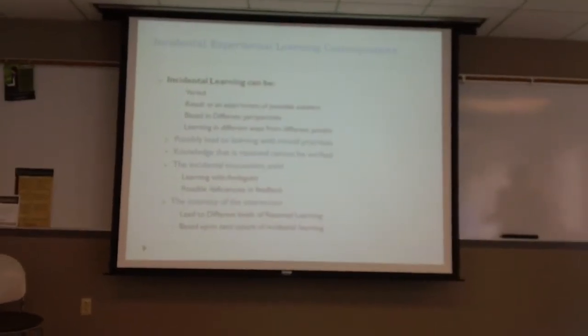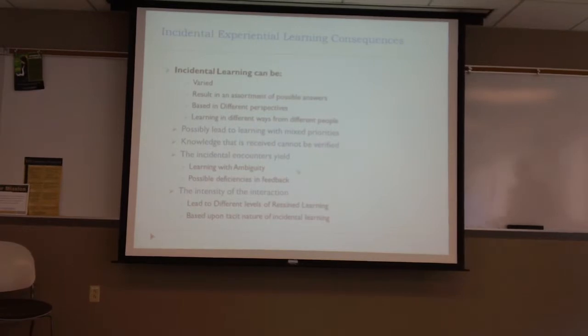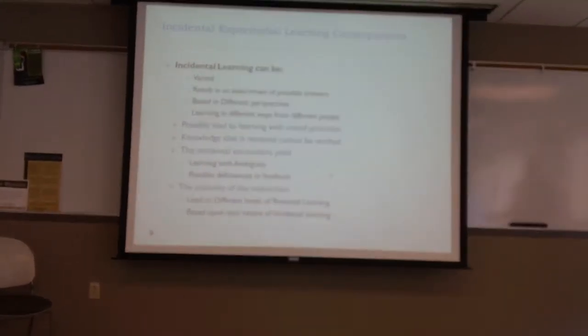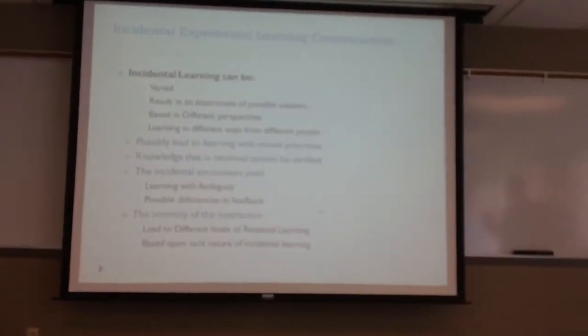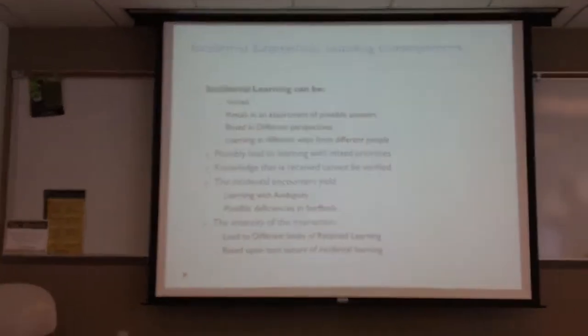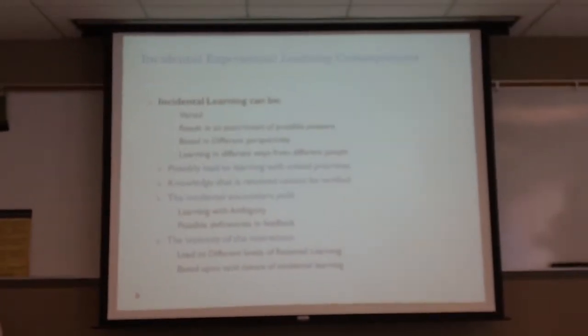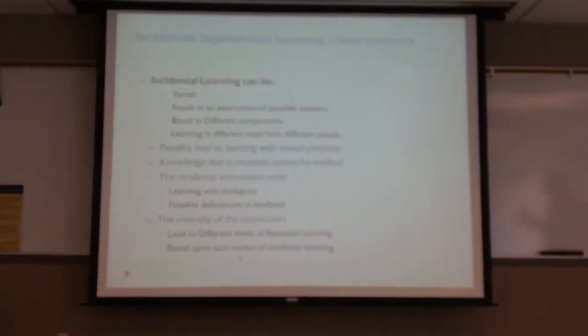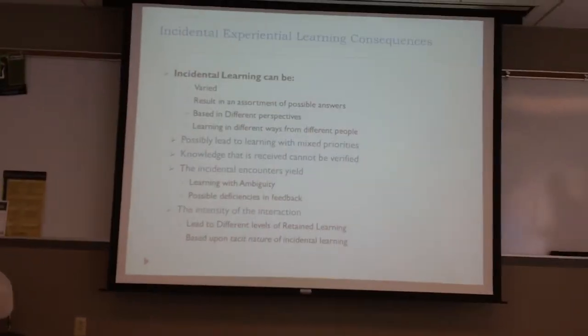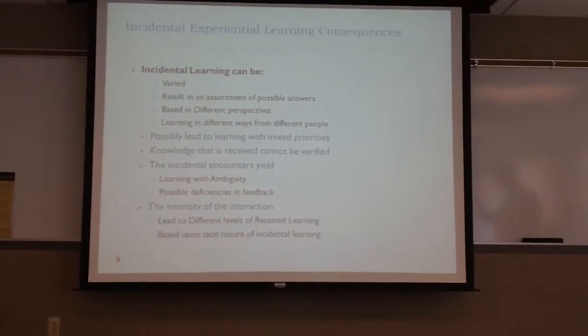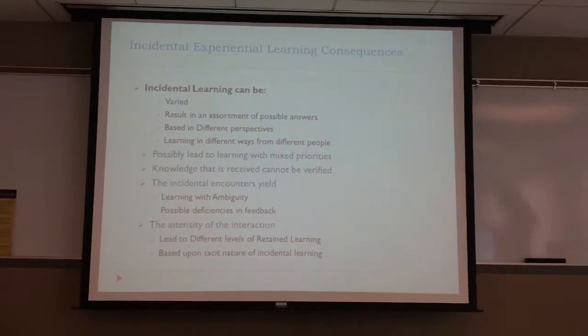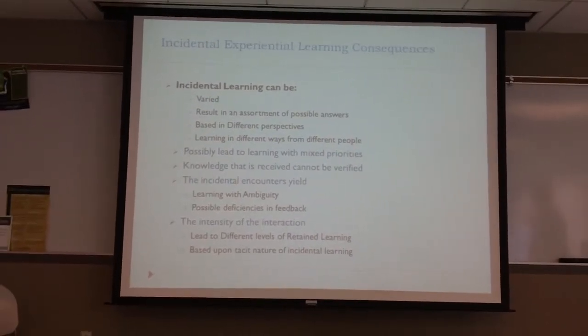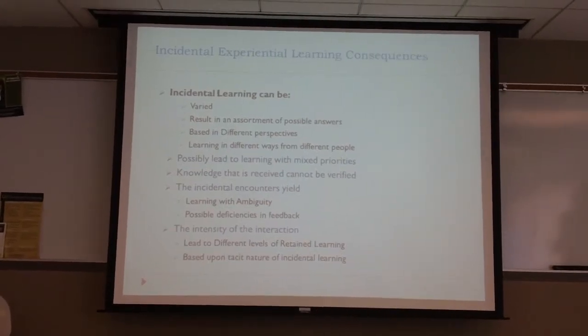We've created this unanticipated path just because of our incidental learning and how we interact. There's ambiguity and deficiencies in the feedback because you don't always get feedback. The intensity of the interaction—sometimes that learning would solidify quicker or less so, depending upon how the thing was happening. Because it's so tacit, it's really hard to know what exactly people are learning. Just because they read the policy and signed the piece of paper doesn't mean they memorized it.